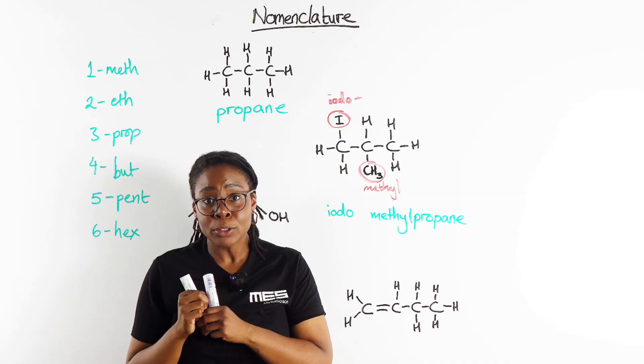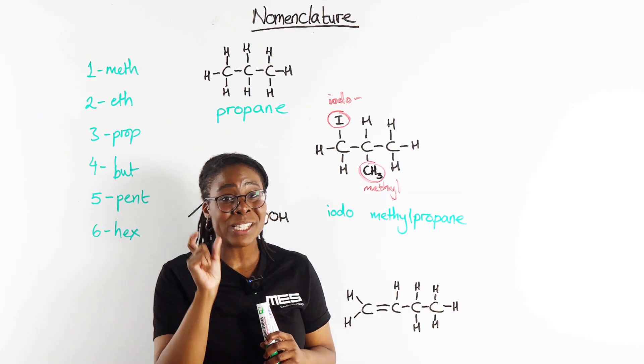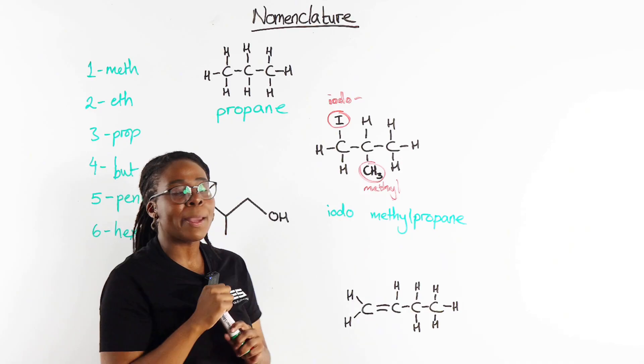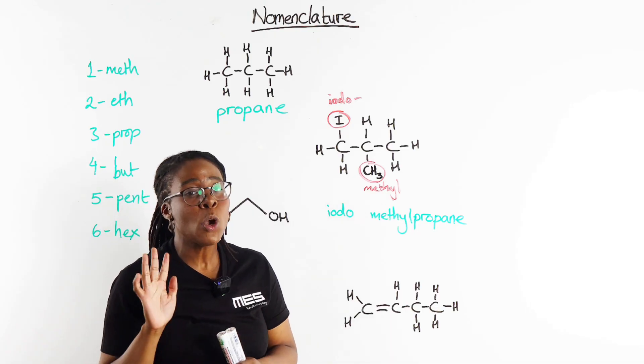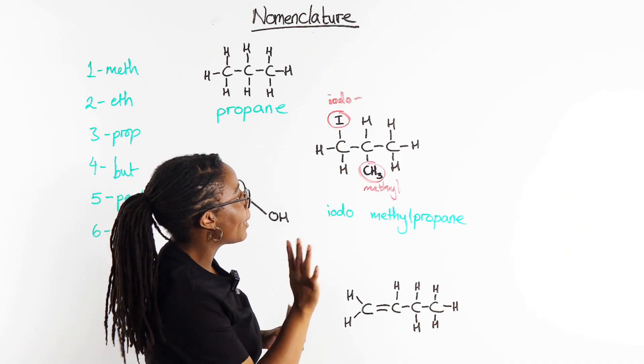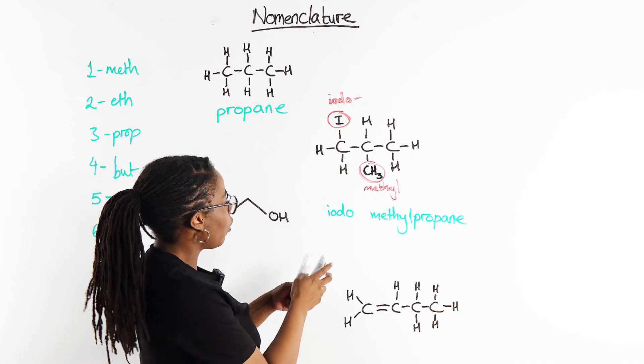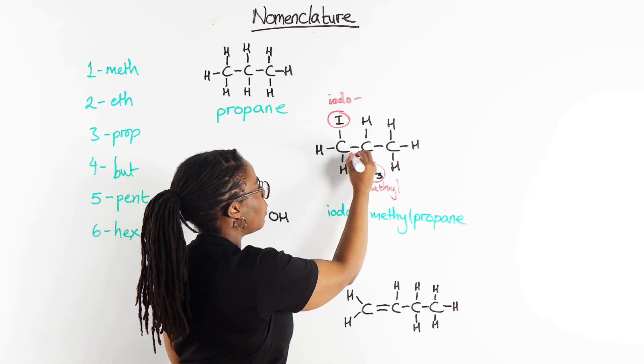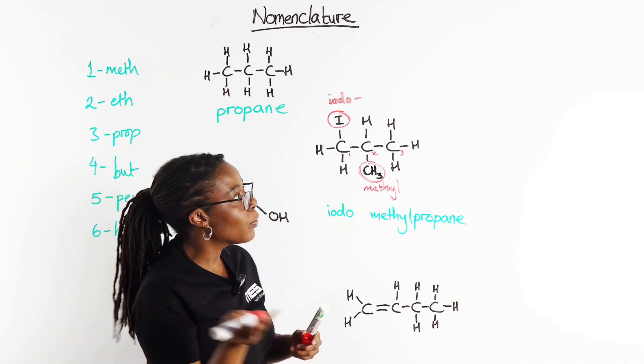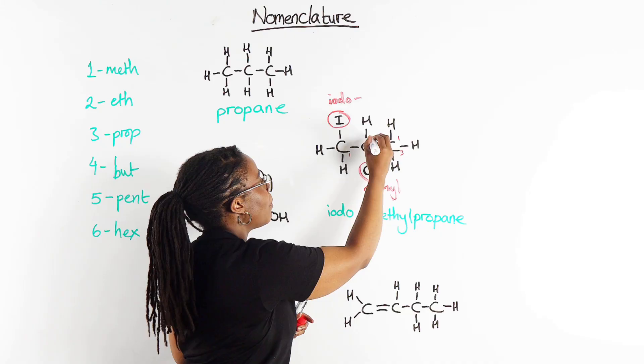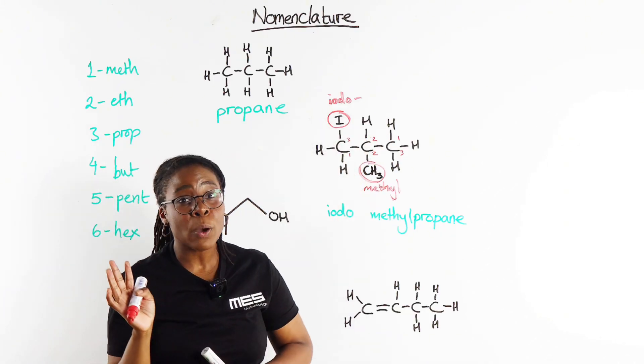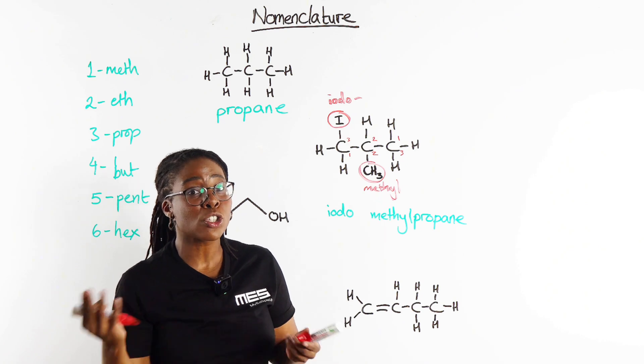Now you'll notice that I've left gaps and that's because we need to position these groups. We have to say which carbon they are on, and employing another one of our naming rules, we want to use the smallest possible numbers. Because when we're numbering these compounds we can actually count from left to right making this carbon one, this carbon two and this carbon three, or we could count from right to left making this carbon one, this carbon two and this carbon three.